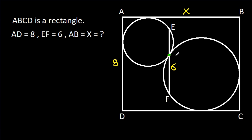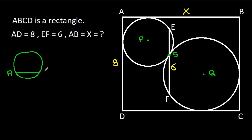Suppose this point is S, and suppose the center of this circle is P and the center of this circle is Q. In any circle, if AB is any chord and O is the center, and from the center we draw a perpendicular on the chord — suppose this point is M — then AM will be equal to BM.